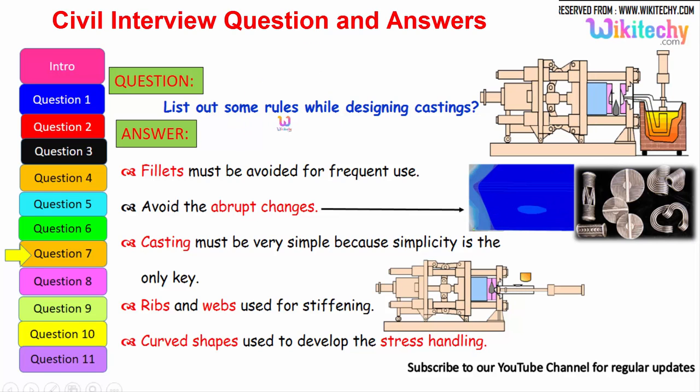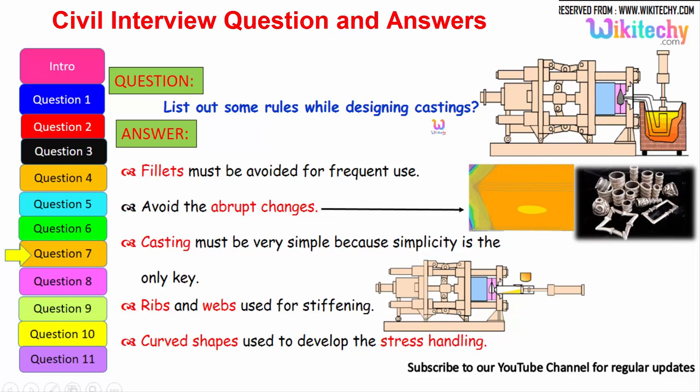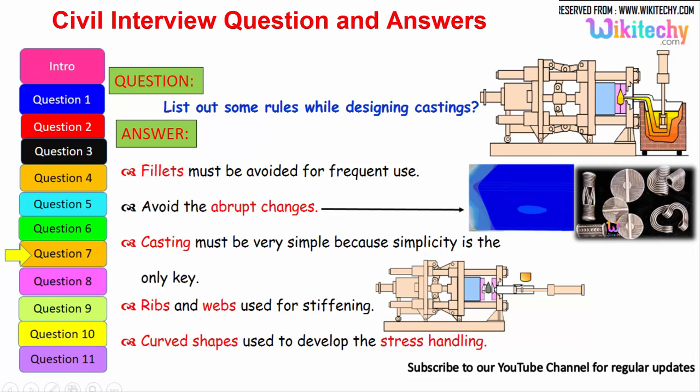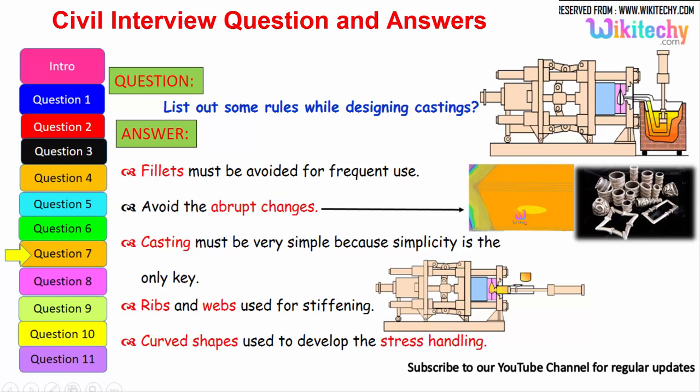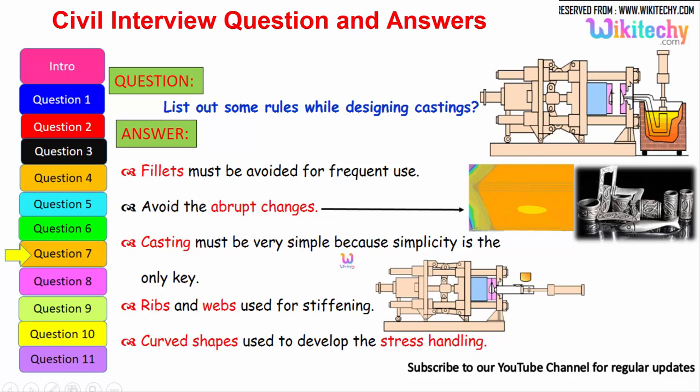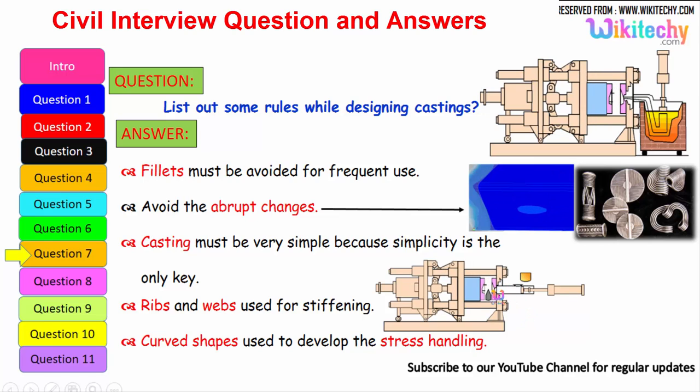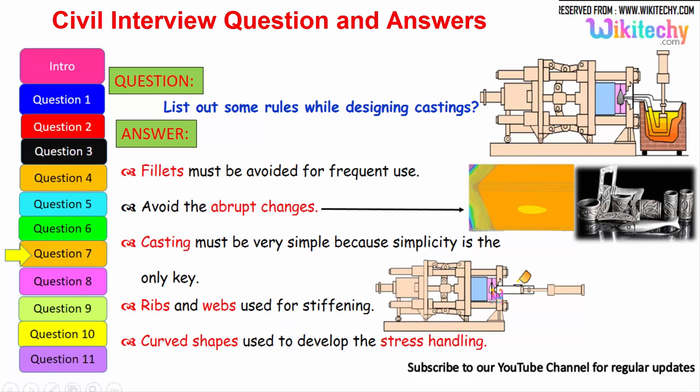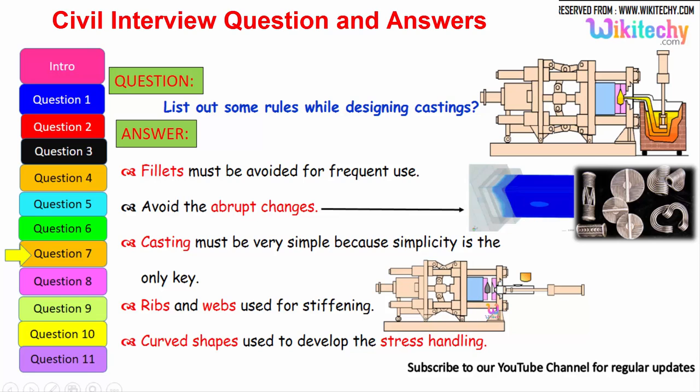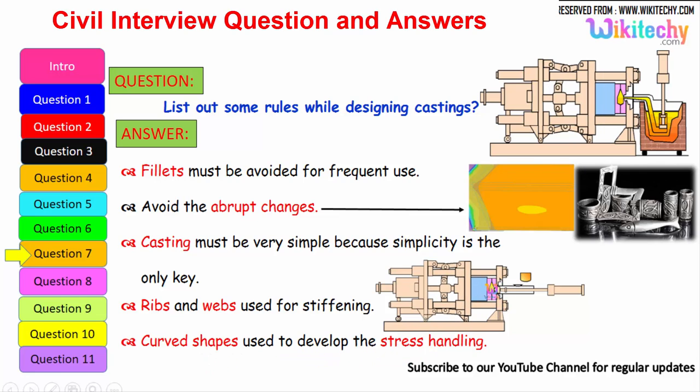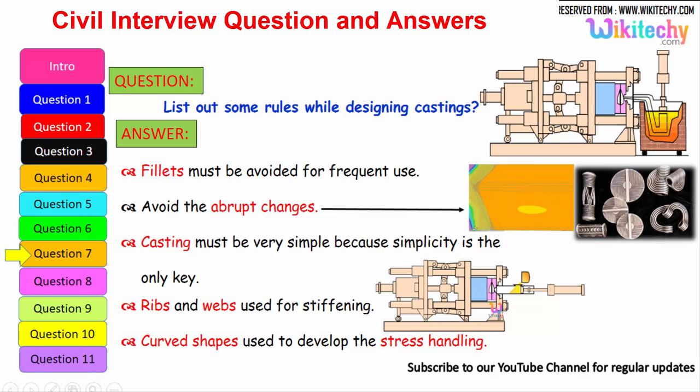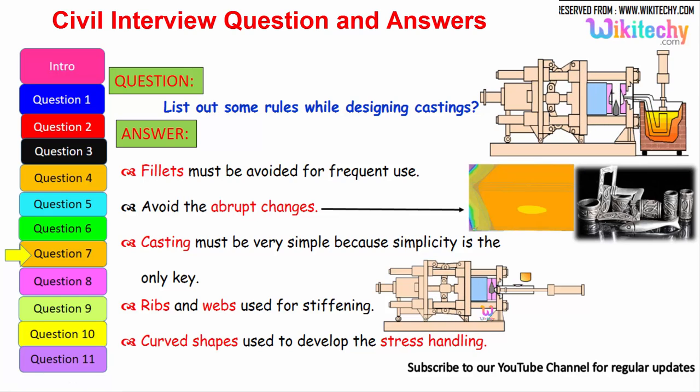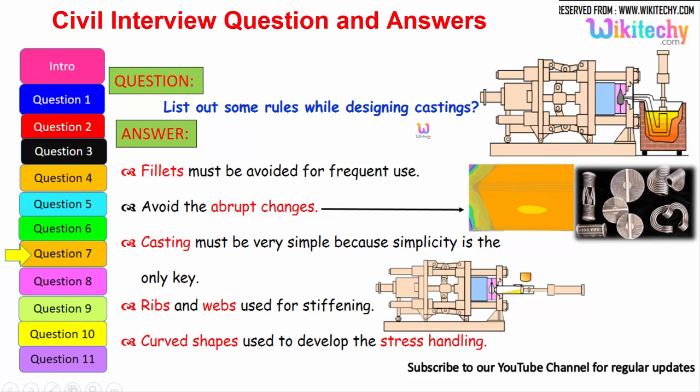Let us see some of the rules while designing castings. So fillets must be avoided for frequent use. That is the first one. Avoid the abrupt changes. It should not change. Casting must be very simple because simplicity is the only key. Ribs and webs used for stiffening. So you should have the ribs over here. You should have the ribs and everything. The curved shape should be used to develop the stress handling. So it should be a curved shape to avoid the stress handling. These are all some of the rules which we have to follow for castings.